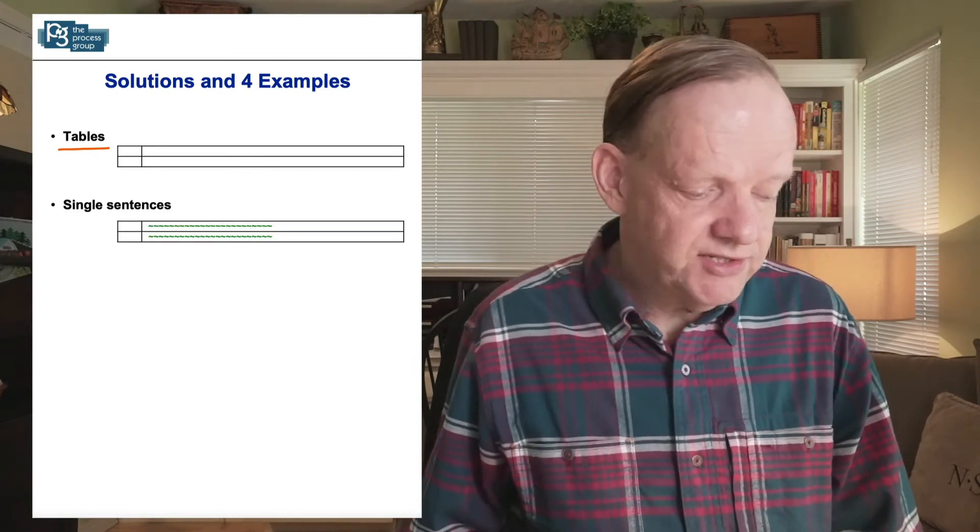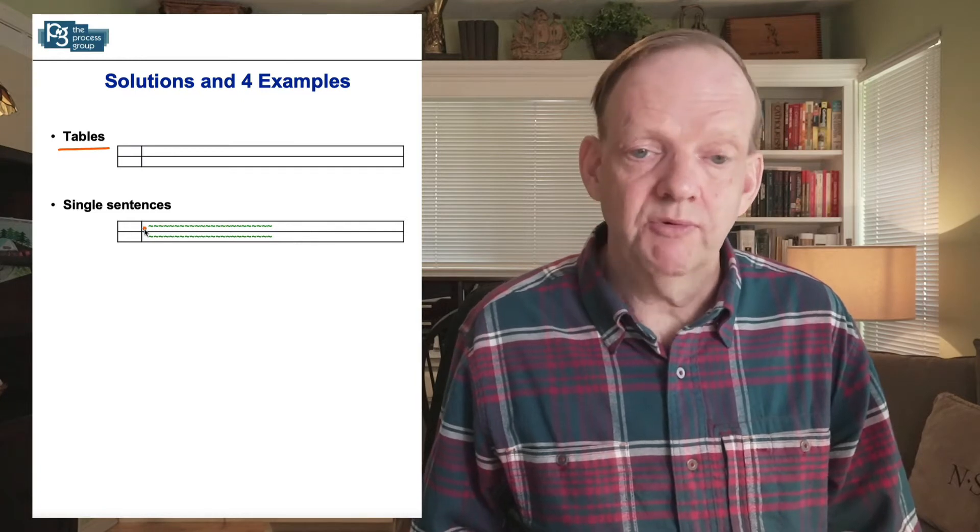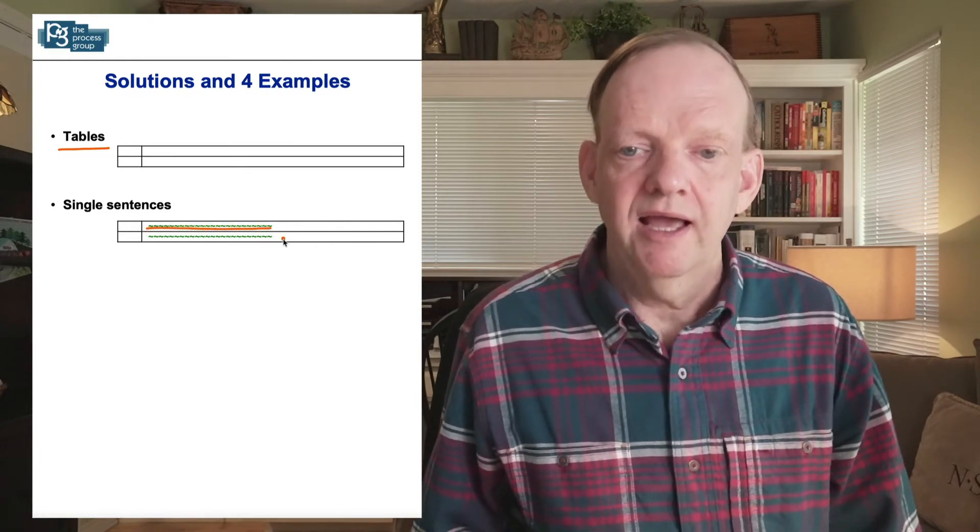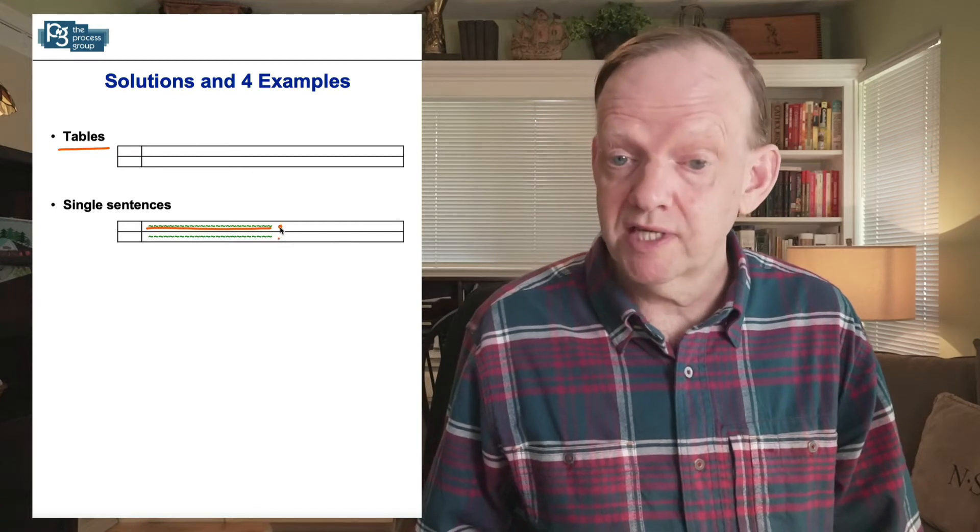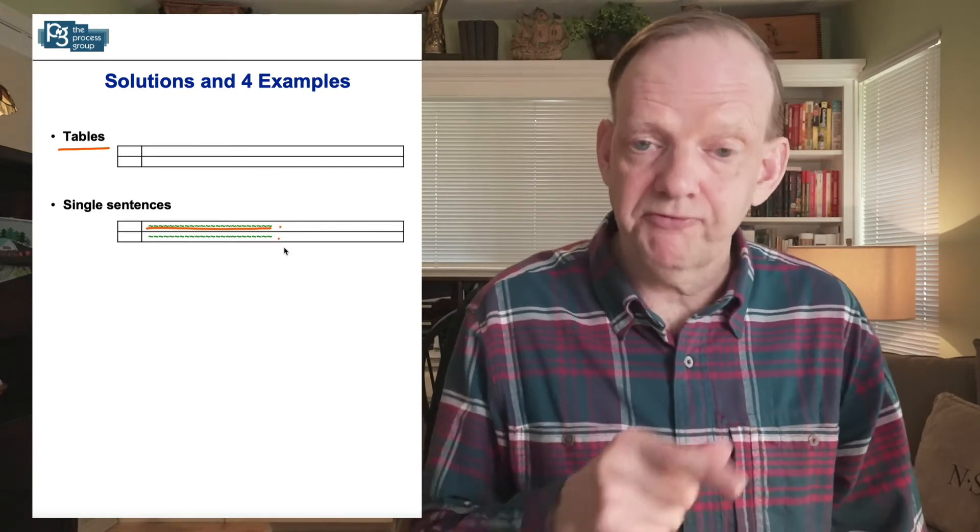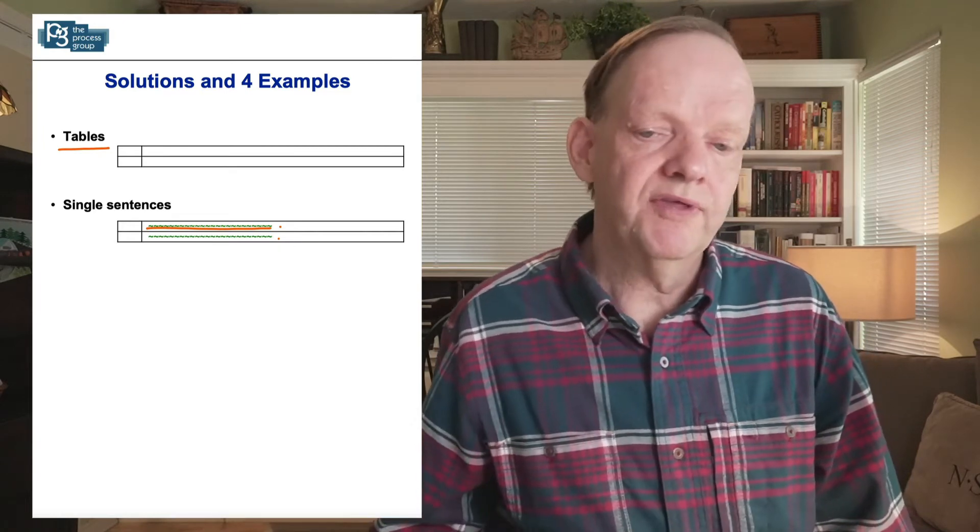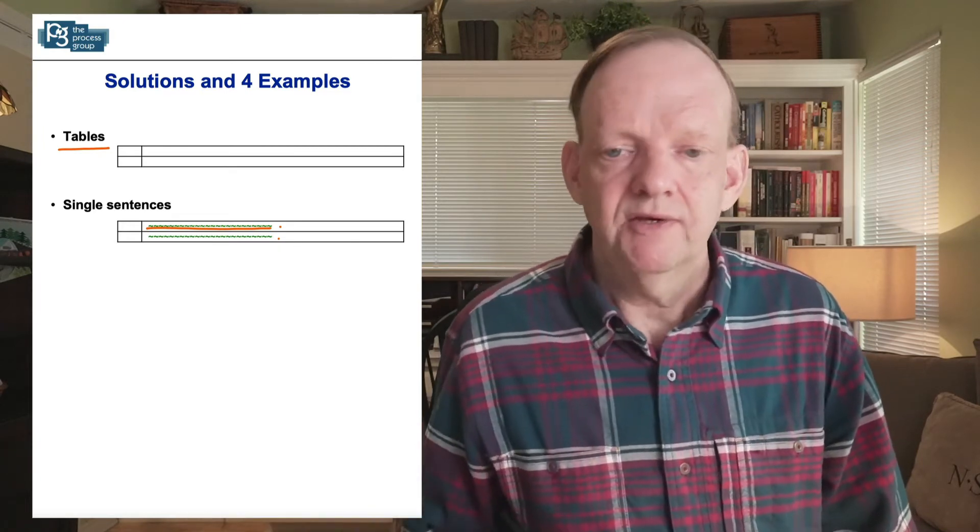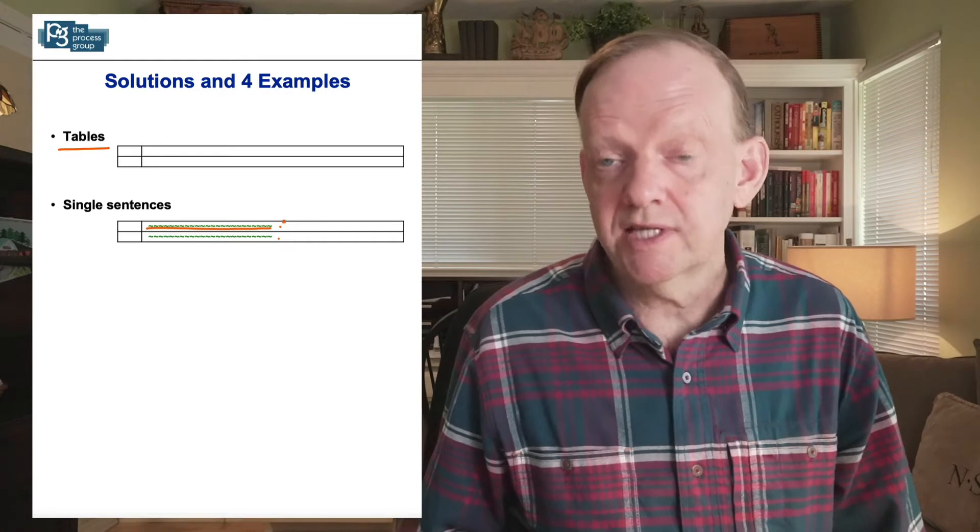Second one is to use single sentences. So we'll take our text of our paragraphs and we'll just have one sentence per line here. And if there were more than one sentence before in our paragraph, we then add a new line to our table.